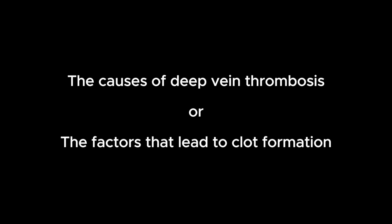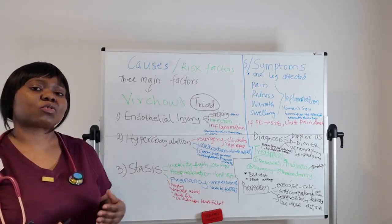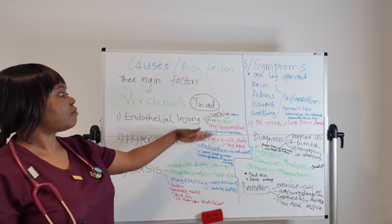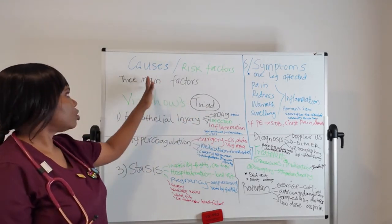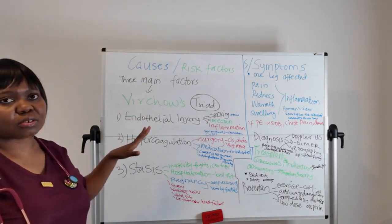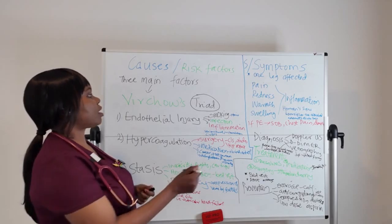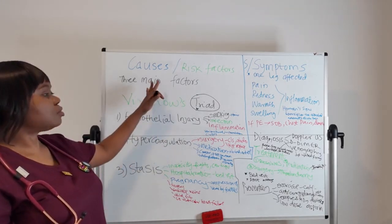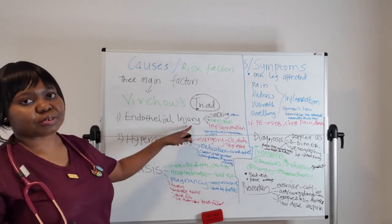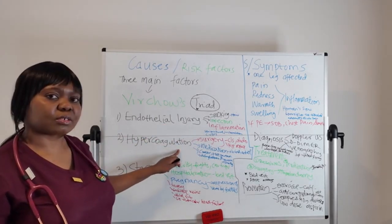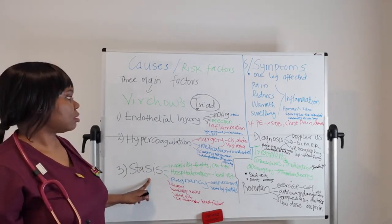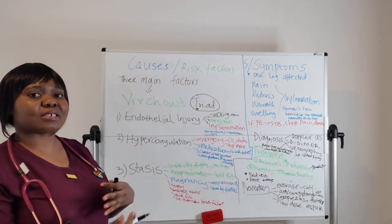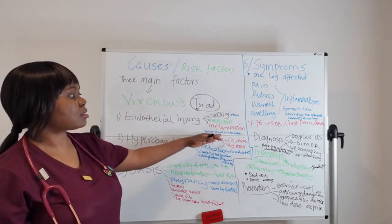Let's look at the causes of DVT — the factors that lead to clot formation in the deep veins. We call these three main factors Virchow's triad. Triad means three: number one is endothelial injury, number two is hypercoagulation, and number three is stasis. Let's look at each in detail. The endothelium is the inner lining of the blood vessel, and when it is injured it can lead to blood clot formation.